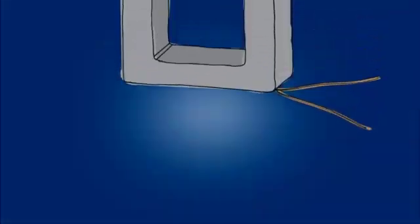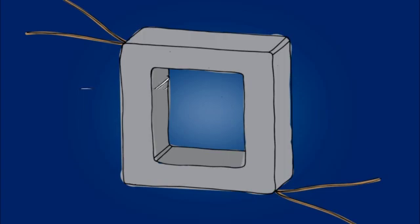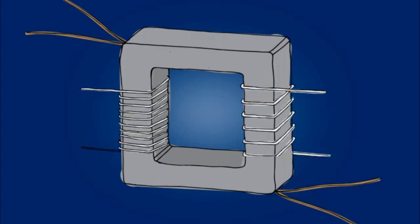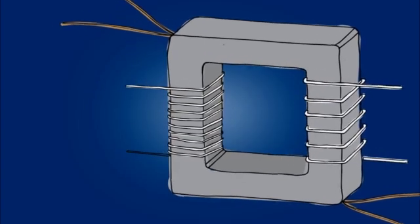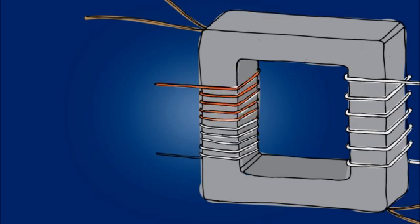Transformers start with an iron core. On two sides of this iron core, wire is coiled. On the high voltage side, the coil is wrapped around the core many times. This side receives or produces high voltage.